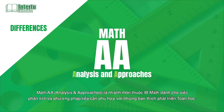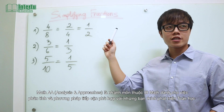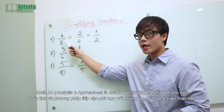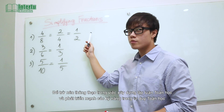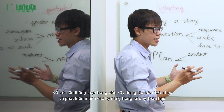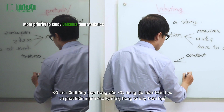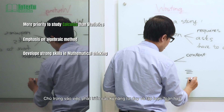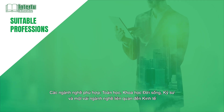Math AA, or Analysis and Approaches, is for students who enjoy developing their mathematics to become fluent in the construction of mathematical arguments and develop strong skills in mathematical thinking. The emphasis is on algebraic methods. Math AA is suitable for degrees related to math, physical science, engineering, and some fields related to economics.